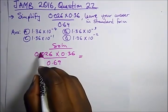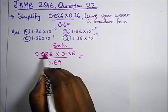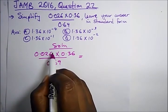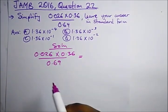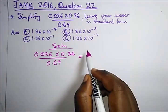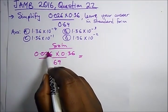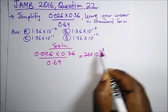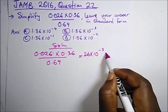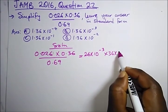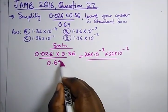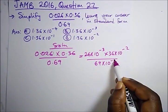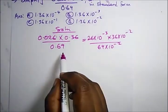We move our decimal place. Remember: when we move our decimal place to the right it results in a negative power of 10. Moving 1-2-3 places gives us 26 × 10⁻³. Moving 1-2 places gives us 36 × 10⁻². And moving 1-2 places in the denominator gives us 69 × 10⁻².